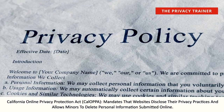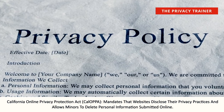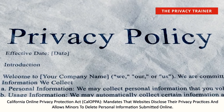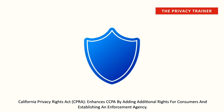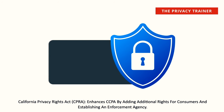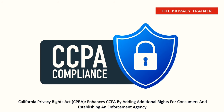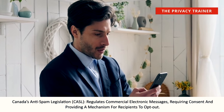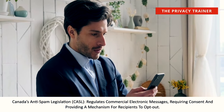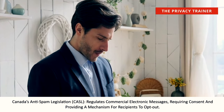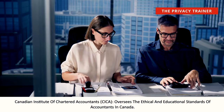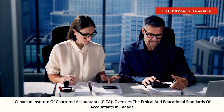California Online Privacy Protection Act, CalOPPA. Mandates that websites disclose their privacy practices and allows minors to delete personal information submitted online. California Privacy Rights Act, CPRA. Enhances CCPA by adding additional rights for consumers and establishing an enforcement agency. Canada's Anti-Spam Legislation, CASL. Regulates commercial electronic messages, requiring consent and providing a mechanism for recipients to opt out. Canadian Institute of Chartered Accountants, CICA. Oversees the ethical and educational standards of accountants in Canada.